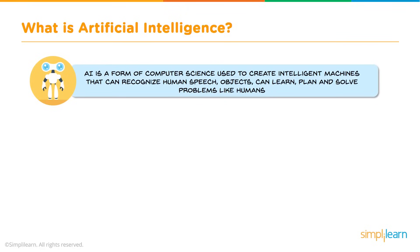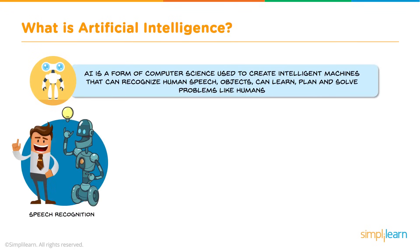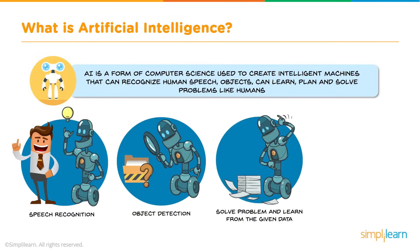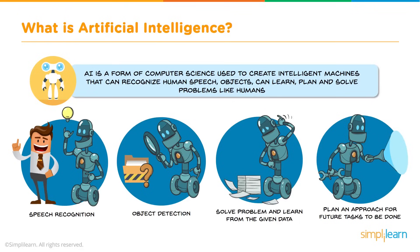I'd like you to focus on that last one: can solve problems like humans. As we saw earlier, we have the computer that can beat the chess champion, and before that, one able to turn on and off lights in the house. Our concept of AI is based primarily on how it interacts with humans. Key capabilities include speech recognition, object detection, solving problems and learning from given data, and planning an approach for future tasks — all very human things.